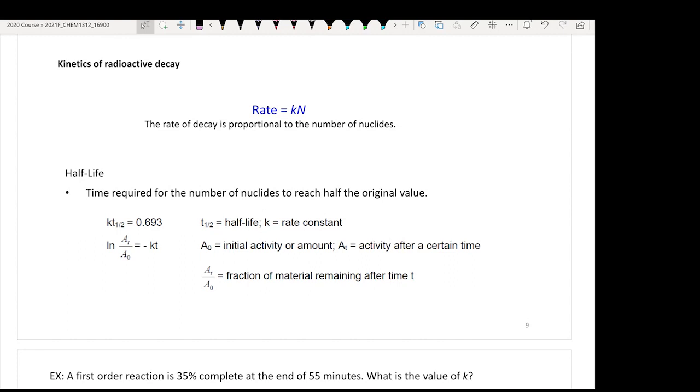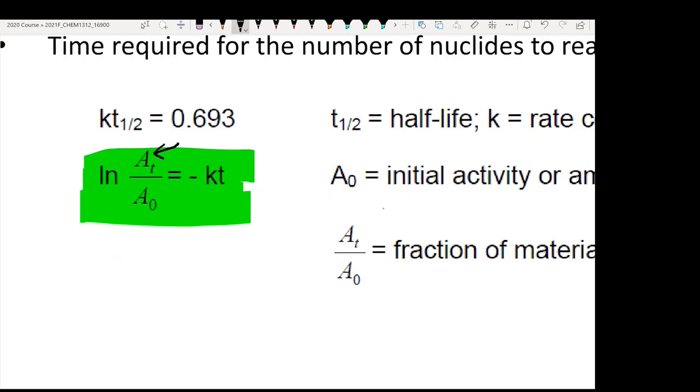To calculate the decay rate if your atoms undergo radioactive decay, this is the only equation to memorize. This is the integrated rate law for the first order reaction. A0 represents the initial concentration of your atom, At is the concentration of atom at time t, k is your rate constant, and t is time.